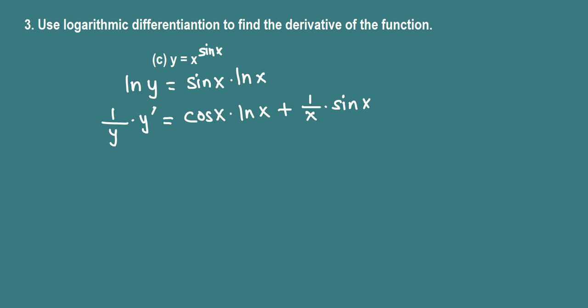Now we need to get y prime by itself. Let's multiply throughout by y. Then y and y cancel on the left side, so y prime equals y times what we have here: y times cos x ln x plus sin x over x.